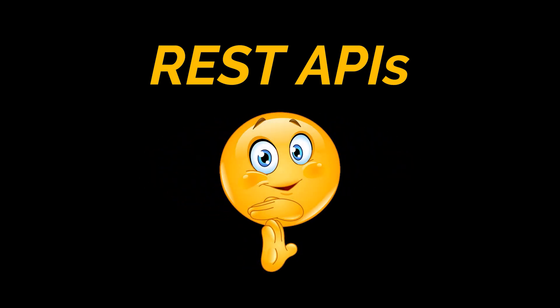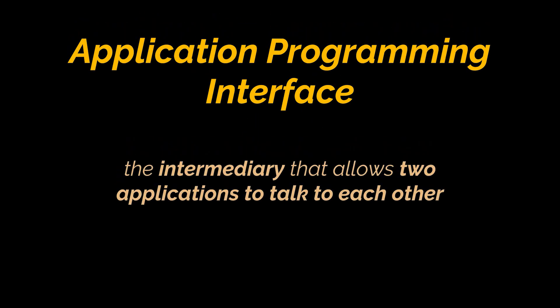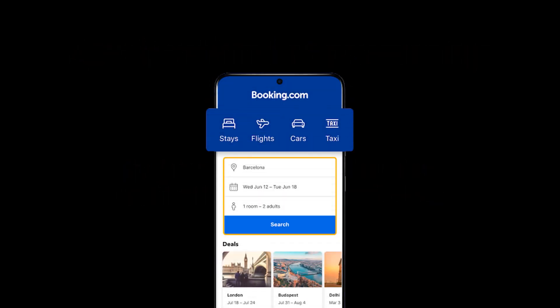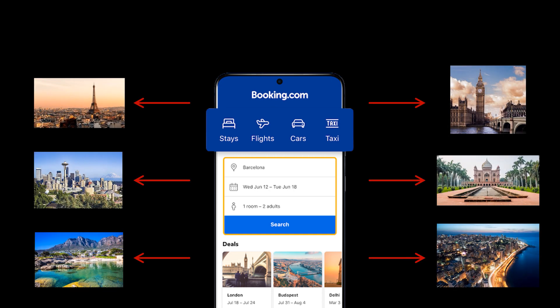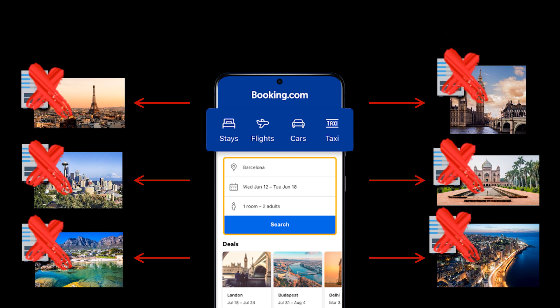Before diving into what REST is, let's first answer what APIs are. API stands for Application Programming Interface, and it's the intermediary that allows two applications to talk to each other. Take booking.com as an example — this website allows you to book flights and hotel rooms in all parts of the world via several agencies. But how does this single website have access to all this information?